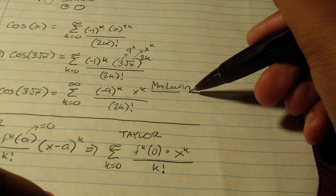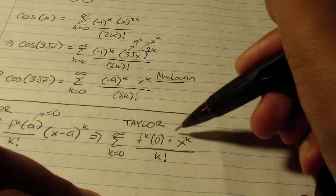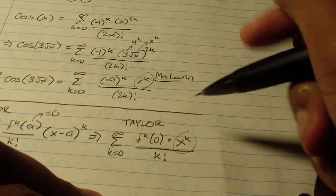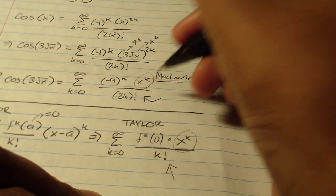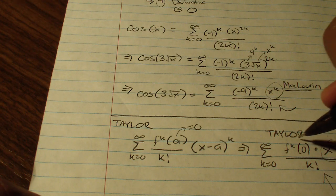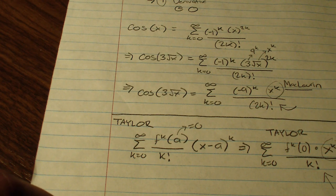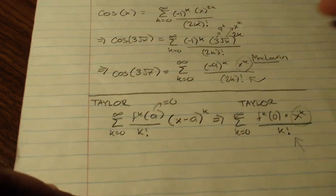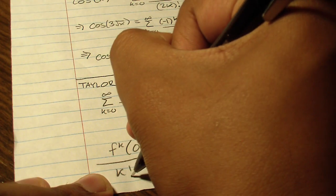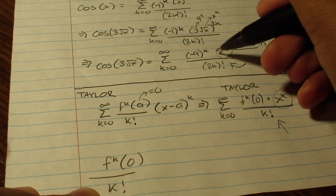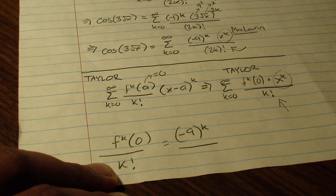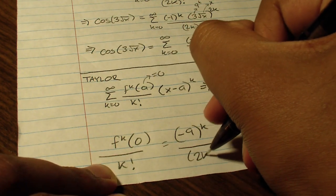Here we can see our Maclaurin representation and Taylor representation next to one another. What do we notice about the two values? They both have the term x to the k, which means that these coefficients must also be equal since these representations are equal. This is important because this coefficient contains the kth derivative at 0, and we're looking for the 9th derivative at 0. So if we solve for that, we can set the kth derivative at 0 over k factorial equal to negative 9 to the k, all over the quantity 2k factorial.